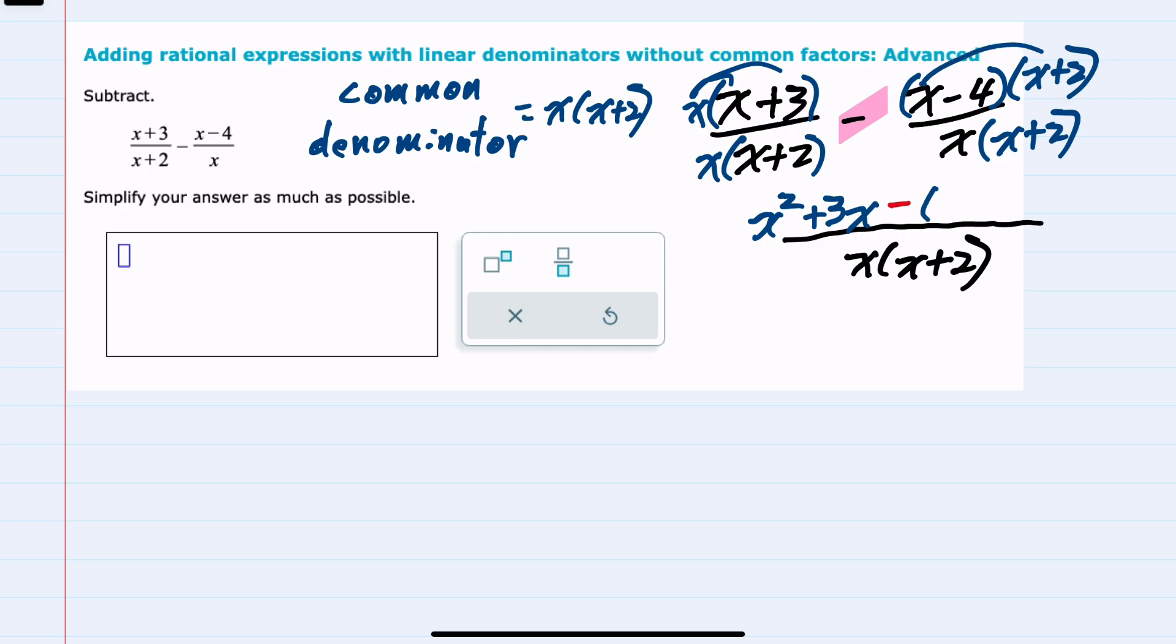I'll go ahead and do this multiplication in the numerator. Distributing the x, x times x is x squared, x times plus 2, a 2x, minus 4 times x, a minus 4x, and minus 4 times 2, a minus 8. We've rewritten this as a single fraction with that common denominator.